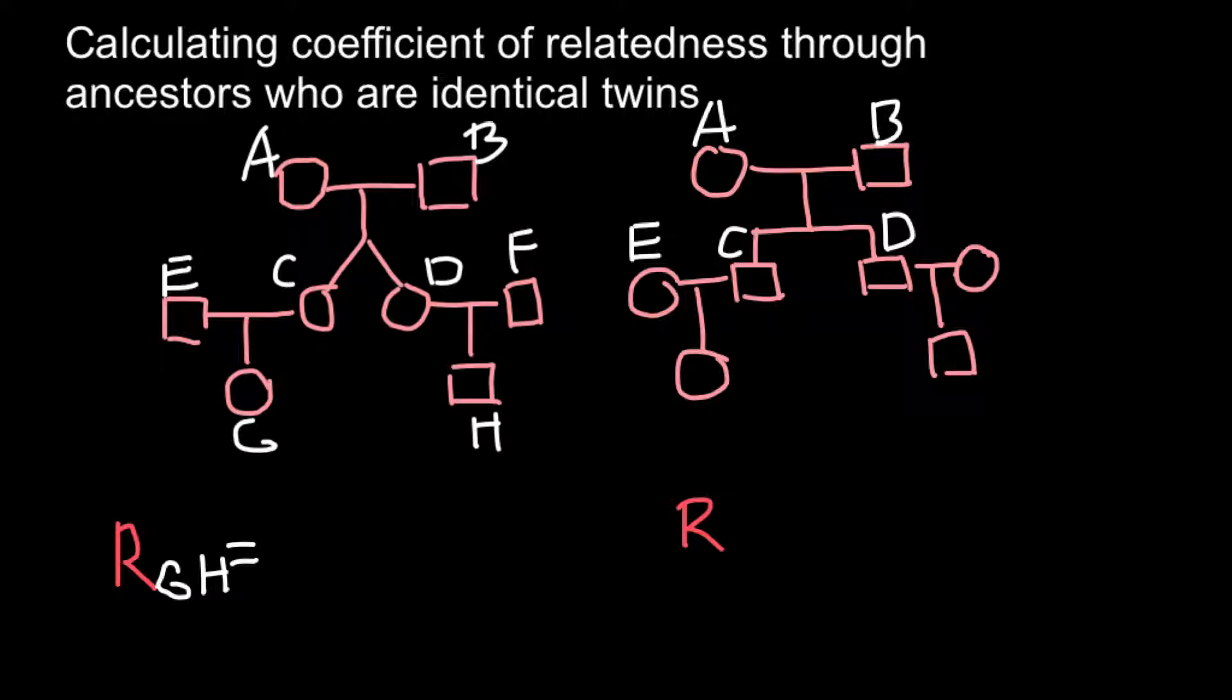Coefficient of relatedness between individual G and H. As you see, individuals G and H are going to be cousins. This is going to be brothers and this is going to be cousins. Coefficient of relatedness would be the number of passes between these two individuals. Individual G got 50% from his father and individual G also got 50% from his mother.